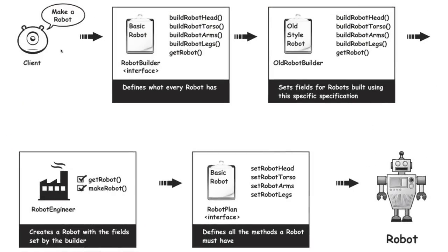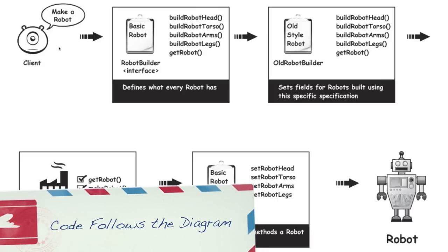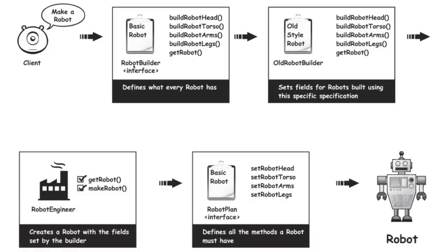Here is the builder pattern. I'm using an alien who is going to request a robot to be built for him. Here is the interface, which we're going to call Robot Builder, and it's going to define what every robot has — a method that builds the robot head, torso, arms, and legs, as well as receives the robot. Then you're going to implement this interface with the Old Robot Builder, and you just need to implement all those methods.